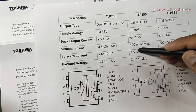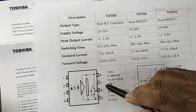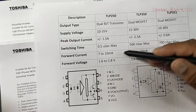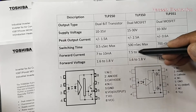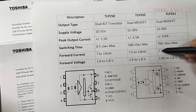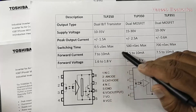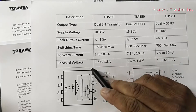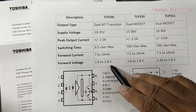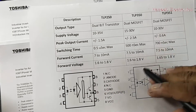Forward current is 7 to 10mA for TLP250 and 7.5 to 10mA for TLP350 and TLP351 — approximately the same across all three. The forward voltage for the LED is also the same: 1.6 to 1.8V in all three optocouplers.